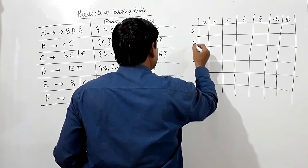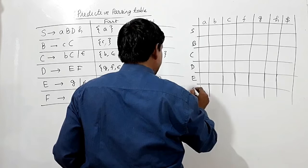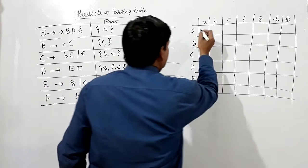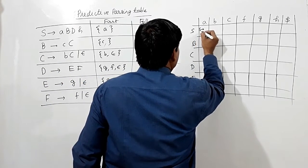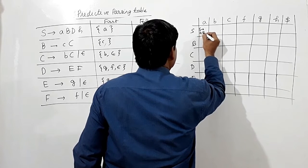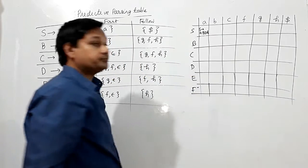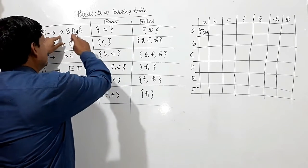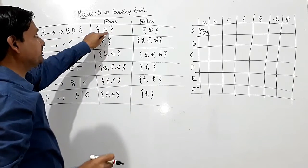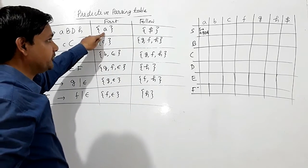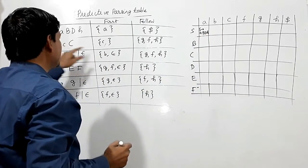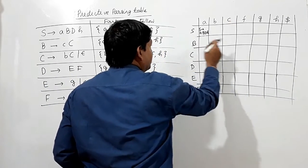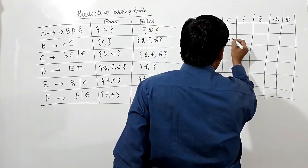For S, there is only one choice: A is in FIRST(S→ABDH), so we write S→ABDH in the cell [S, A]. For B, FIRST(B→CC) = {C}, so whenever we need C from B, we use B→CC, written in cell [B, C].